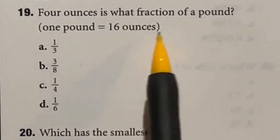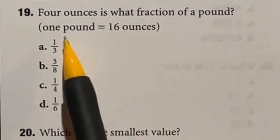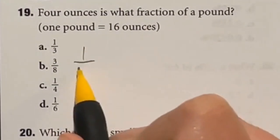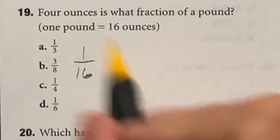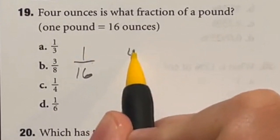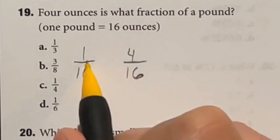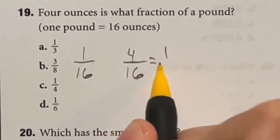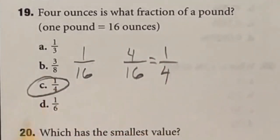So in this case it says four ounces is what fraction of a pound? It tells you one pound is 16 ounces. In other words one ounce is one over 16 of a pound but we have four of them so we actually have four over 16 here since we have four of these guys. Well four over 16 if you divide the top and bottom by four ends up giving you one fourth which is answer C.